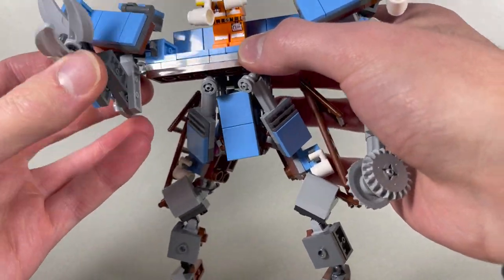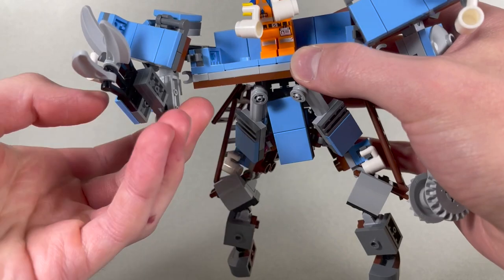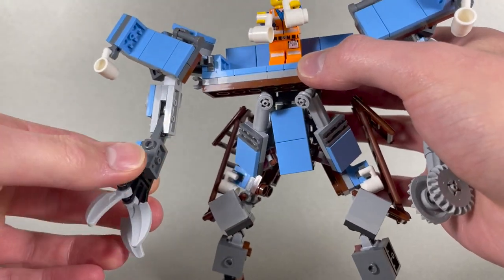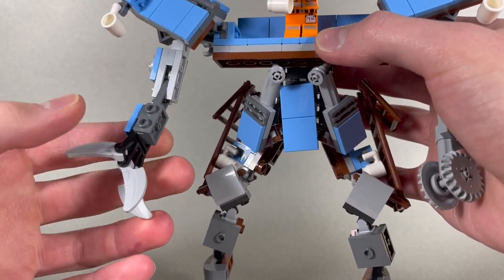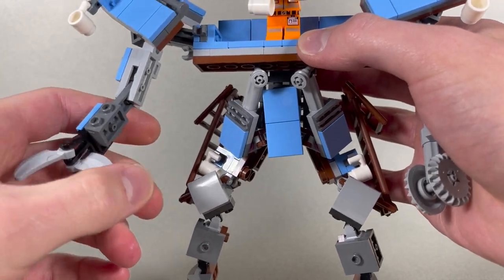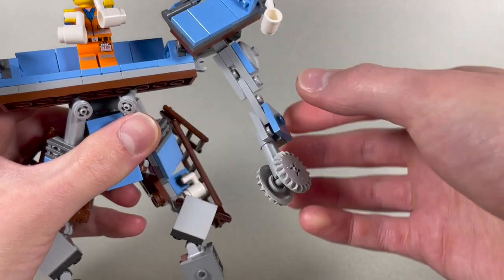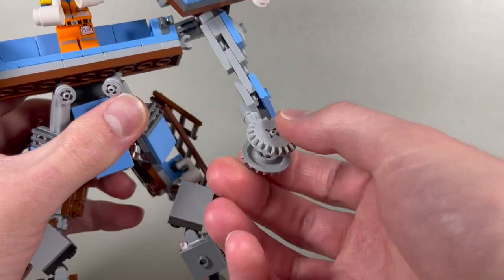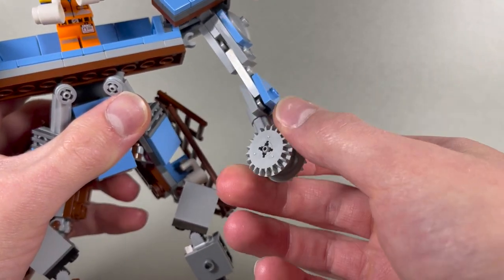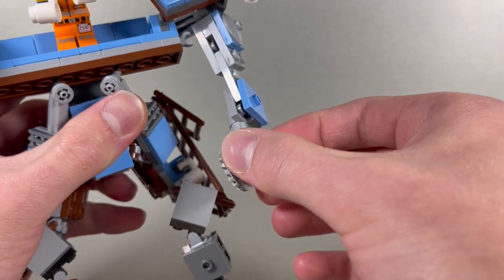His elbows have pretty much the full range, which is nice. And then his fingers are on clip hinges, so they can move in that one direction. Same thing for this arm, except no fingers. So he can just swivel at the saw.